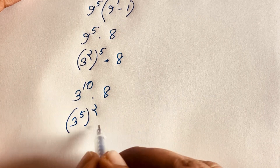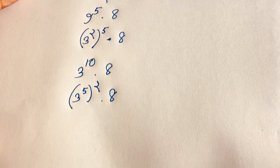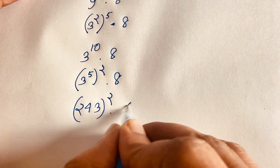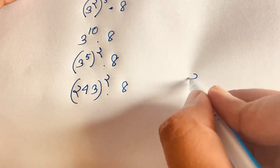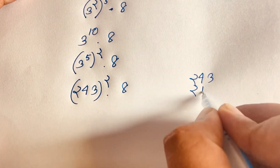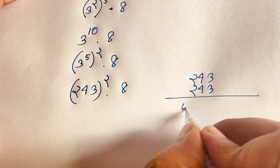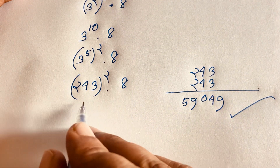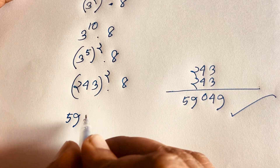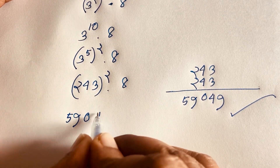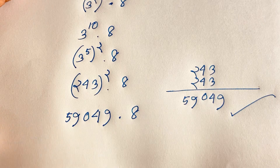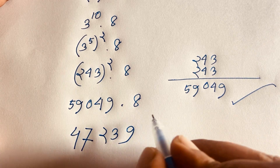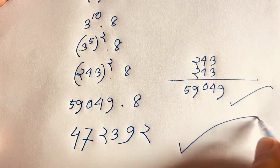So 3 to the power 5 equals 243, and 3 to the power 10 is 243 times 243. Multiplying both values we get 59049. Now at this moment it will be 59049 times 8, and this gives us 472392. This is our final answer.